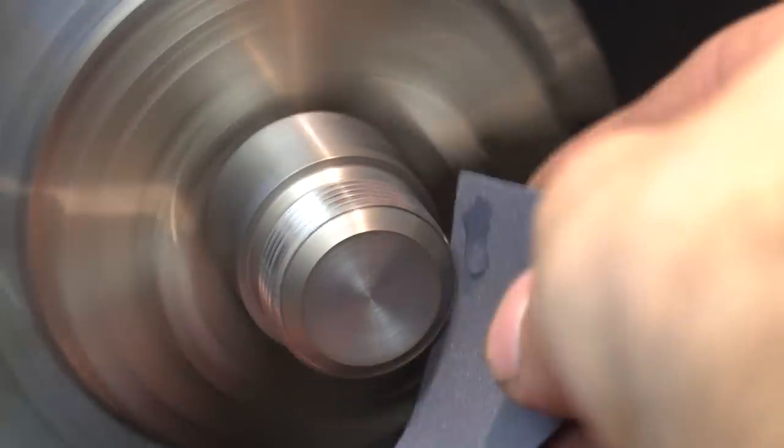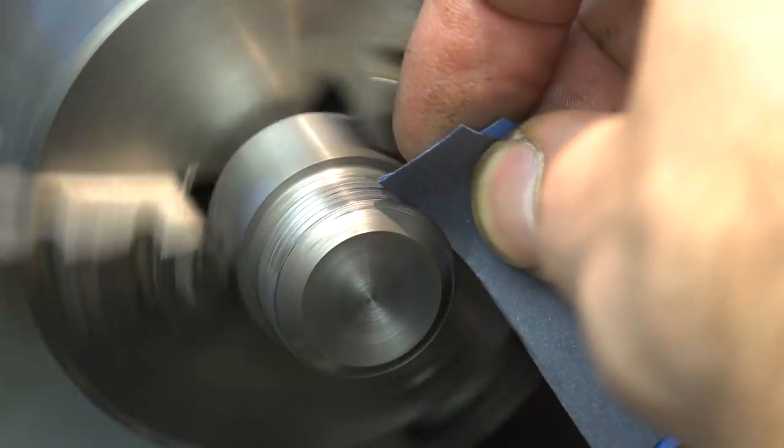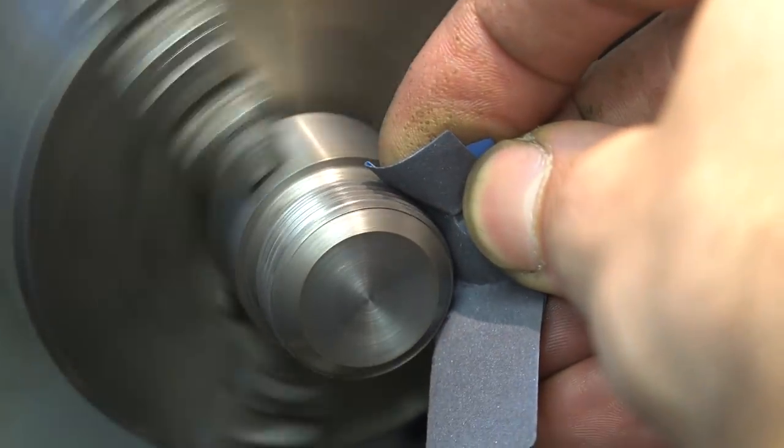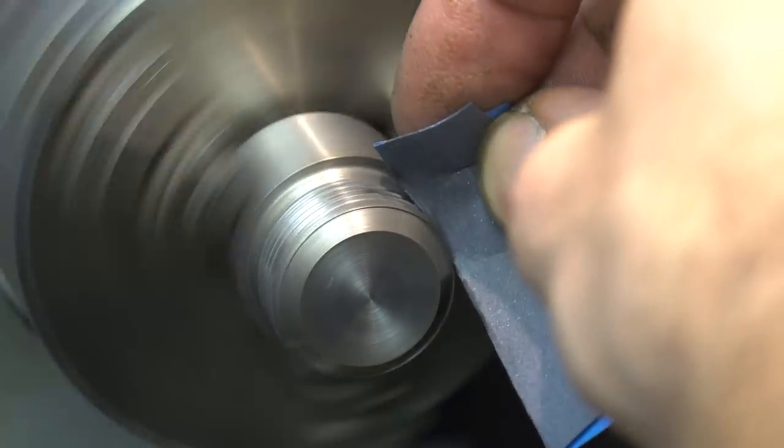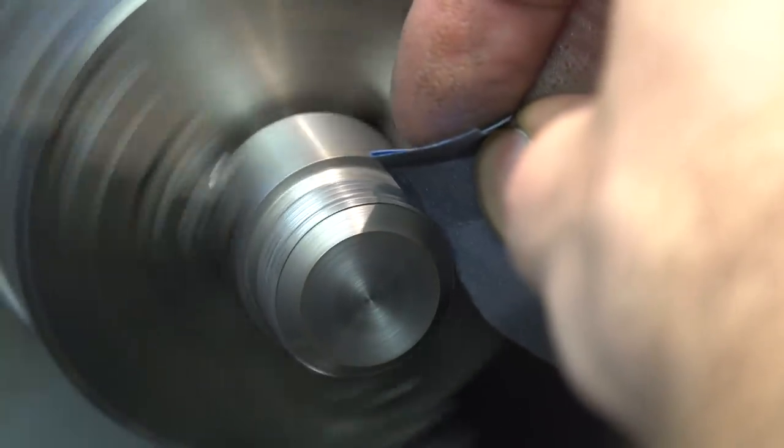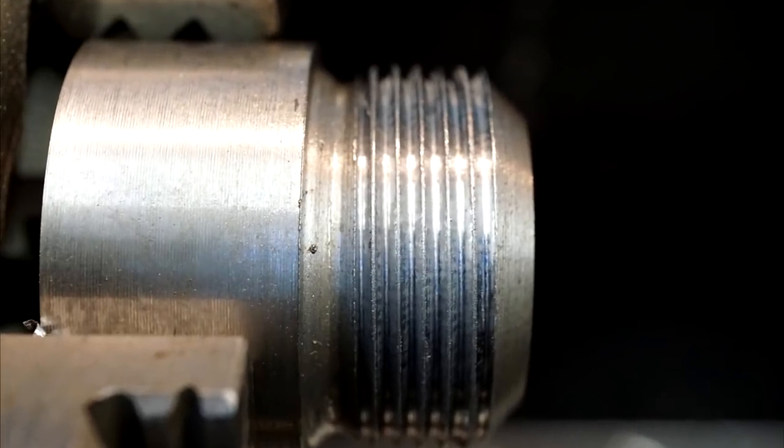When the thread is cut enough, I take sandpaper, apply a bit of oil and sand the thread to a nice finish, but not too much. First sand on top, then bend the sandpaper in half and slowly sand the tooth of the thread, just a bit.